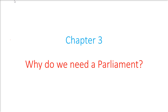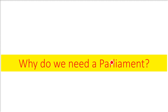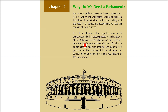We are looking at chapter number 3: why do we need a parliament? Sansad is the parliament. We are in a democracy, that is Lok Tantri. In democracy, the prime importance is the involvement of the people, that is the citizens. The elements that together make a democracy are best expressed in the institution of parliament. Today we will talk about how parliament enables citizens to be part of decision making and control the government. That is why this is a key feature of the constitution.